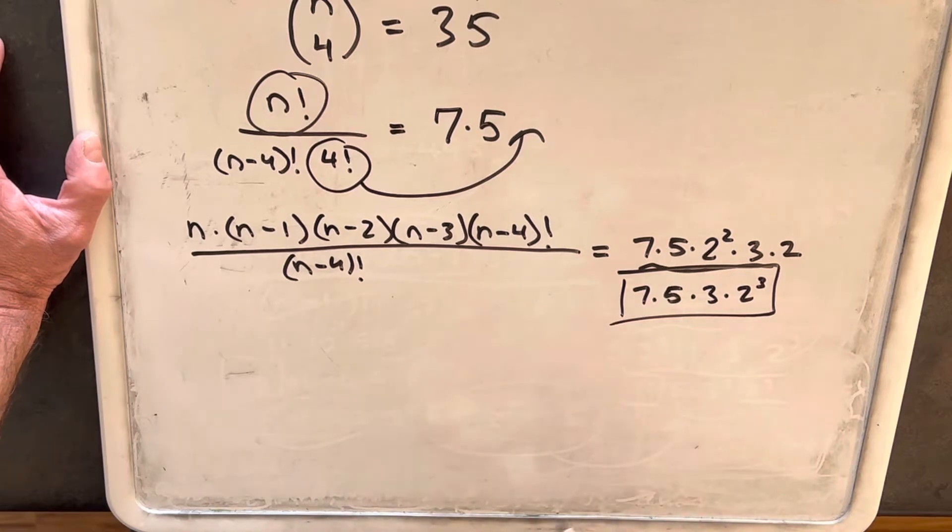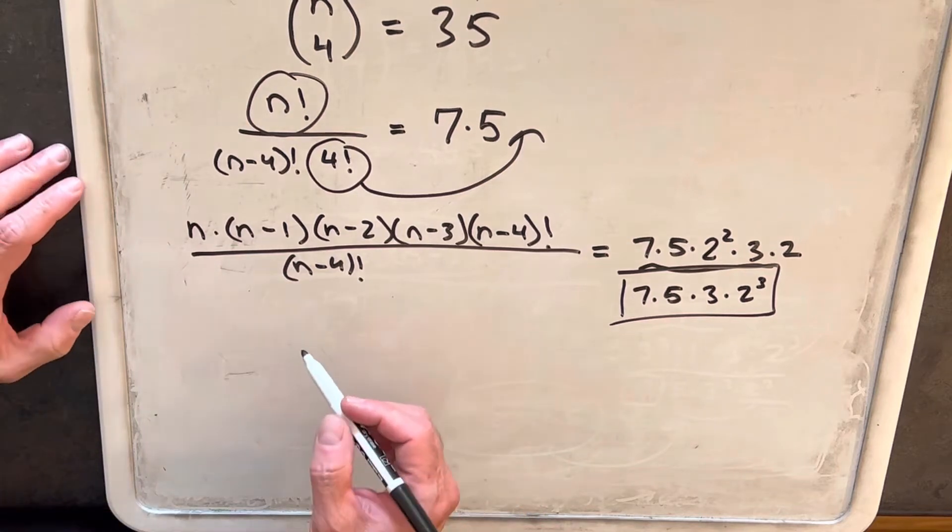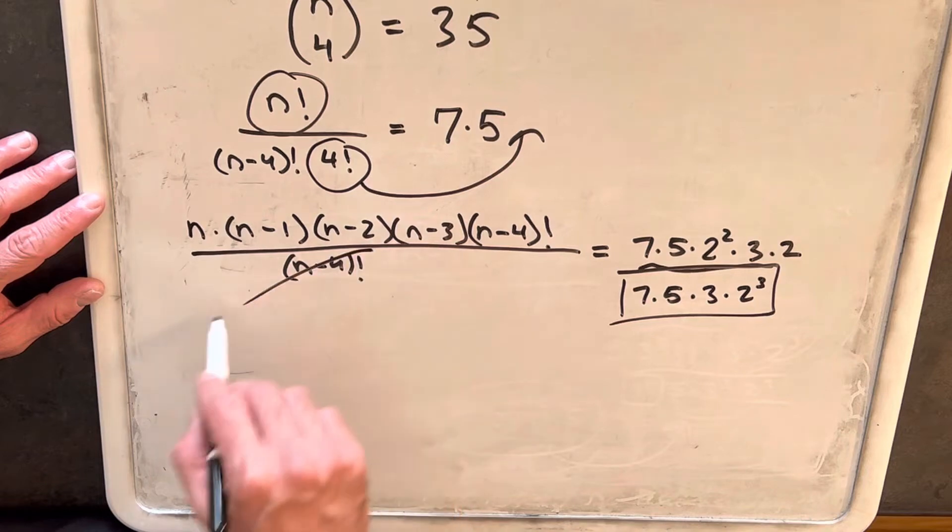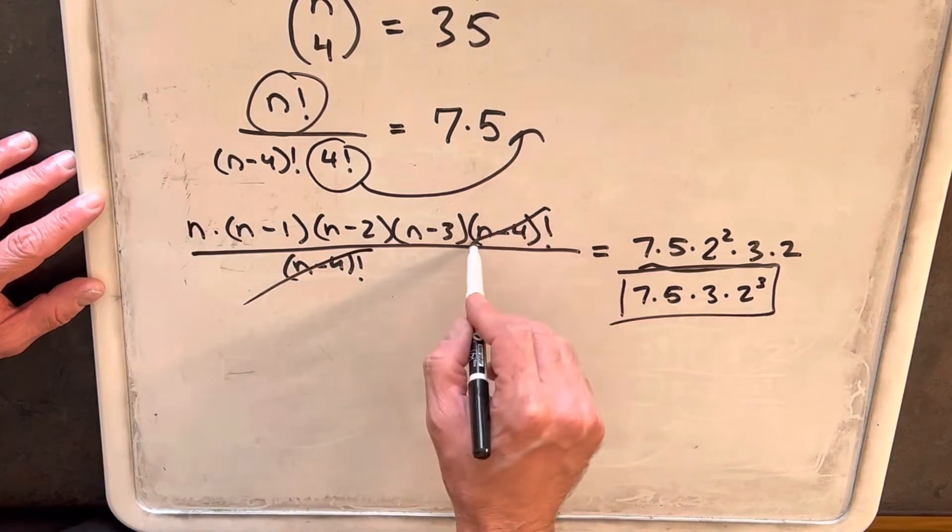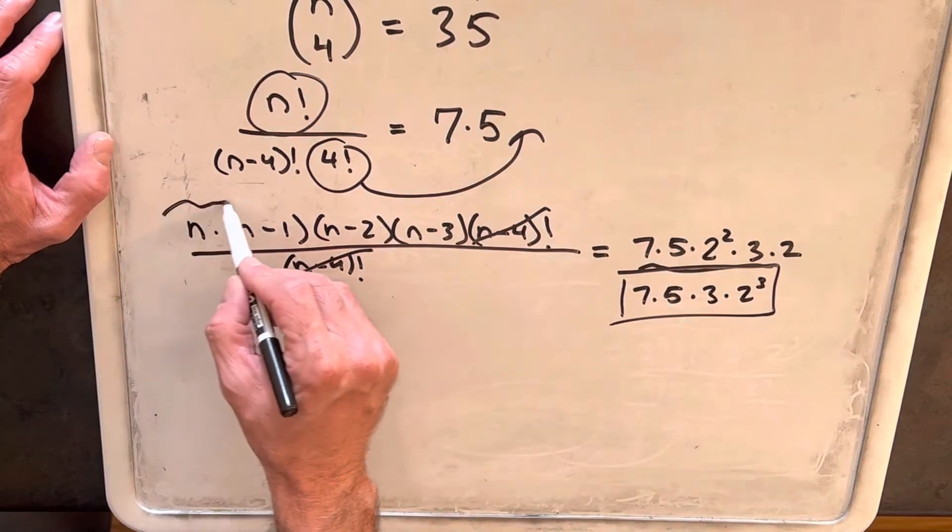I don't know what that number is, but it doesn't matter, because we're going to work with the prime factorization. Now on the left side, cleaning this up, we're going to cancel n minus 4 factorial. So we end up with just 4 consecutive integers.